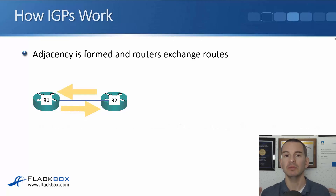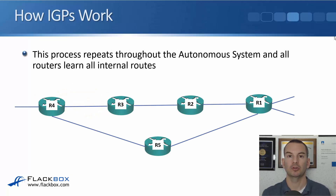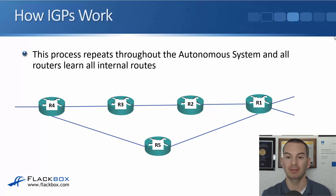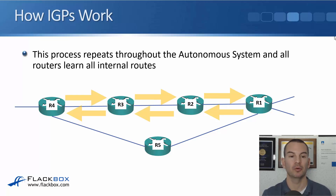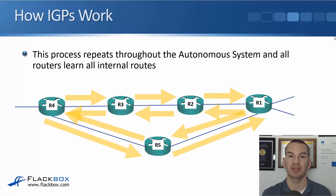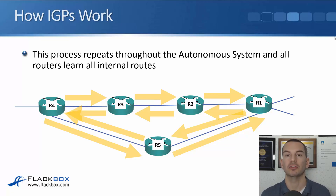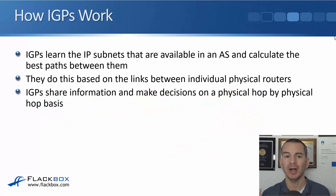R1 says 'Hey, I'm running OSPF too, let's check that our settings match — for example, they're both in the same area — and then we'll form an adjacency.' The adjacency is formed and the routers exchange routes. Within our autonomous system, we enable OSPF on all of our routers. OSPF adjacencies are formed between R1 and R2, R2 and R3, R3 and R4, R4 and R5, and R5 and R1 — so all the routers form adjacencies and exchange routes with each other.